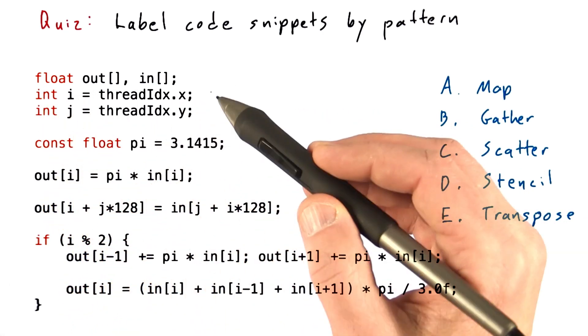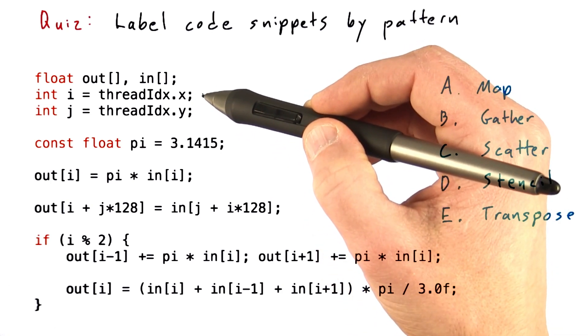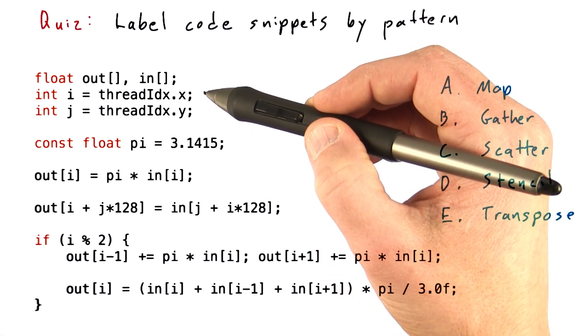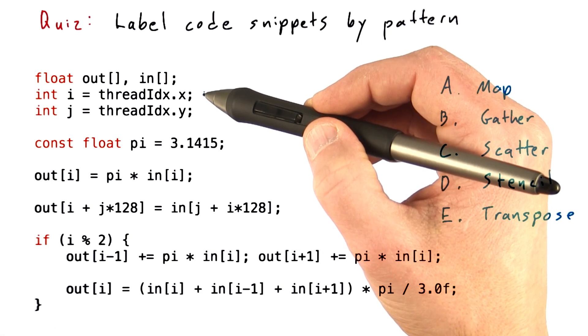These are arrays of floating point numbers, and just for brevity, I've created two variables i and j to represent threadIdx.x and threadIdx.y.